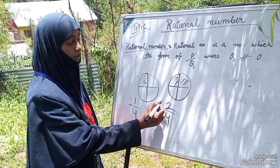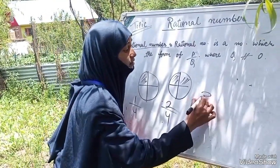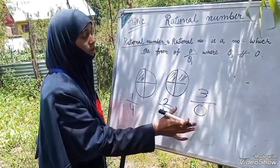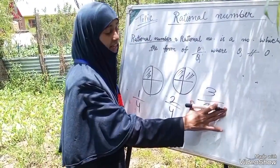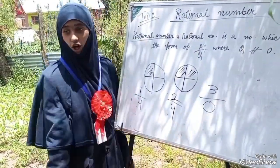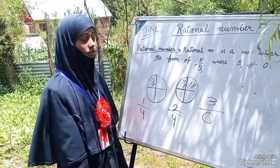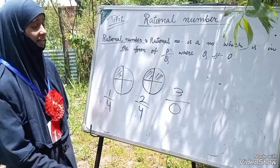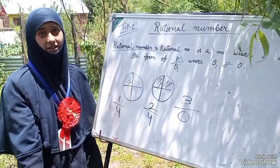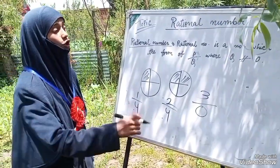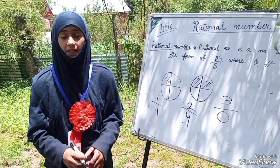Now, if we say three by zero — Shaurina ate three pieces from zero rotis — that is not possible. If you don't have a roti, what will you eat? It is not possible. We cannot divide any number by zero.